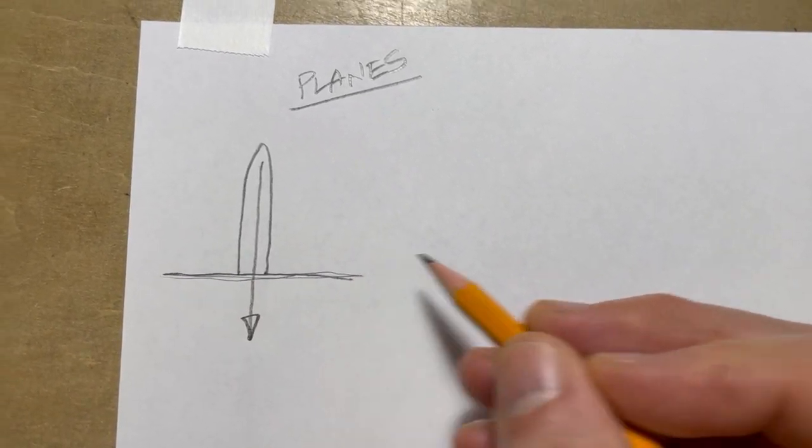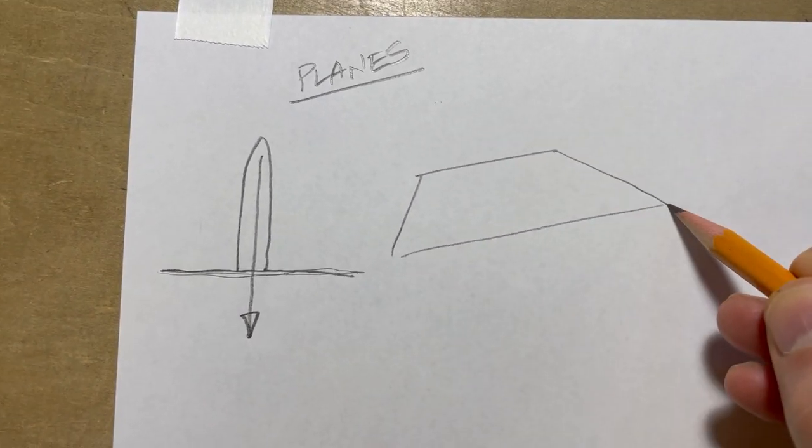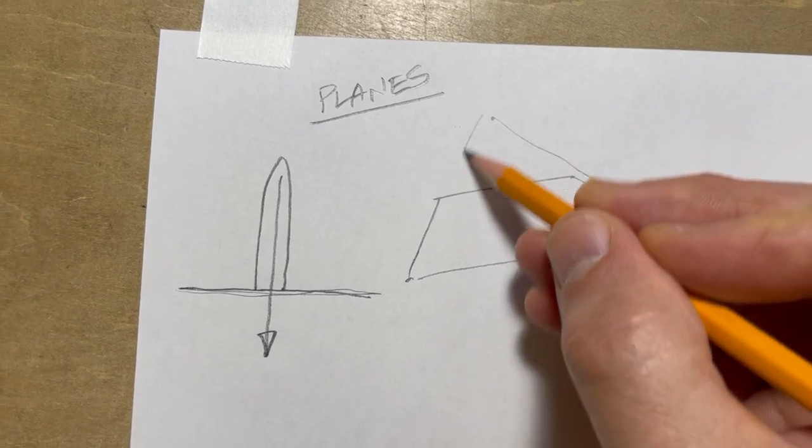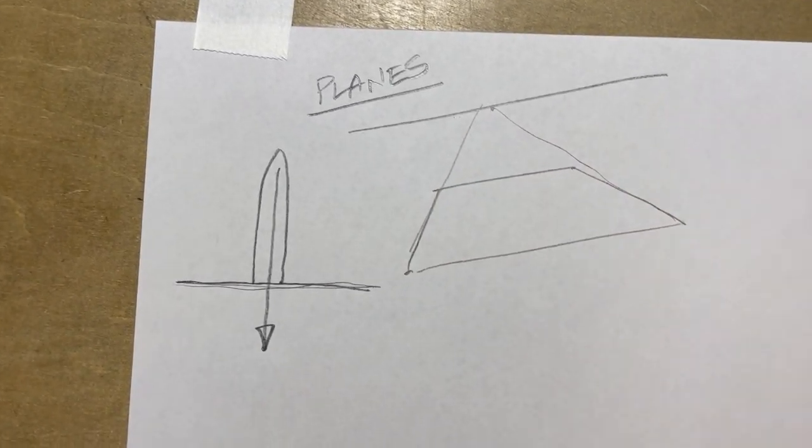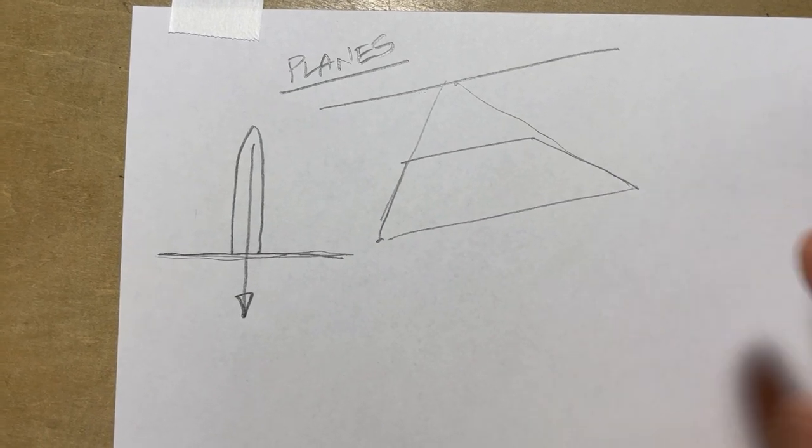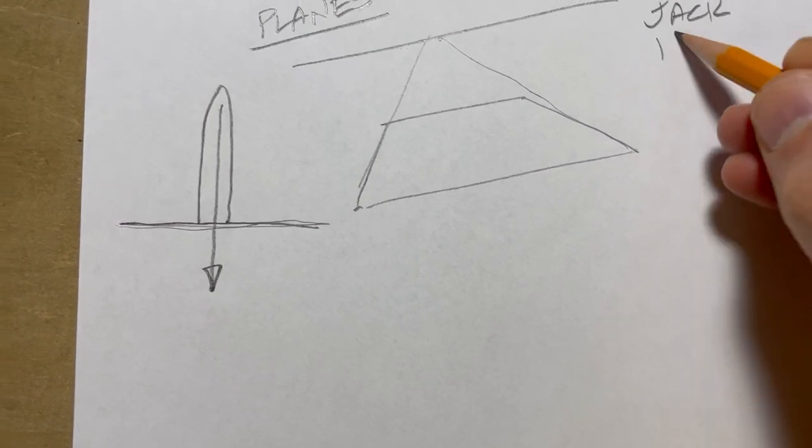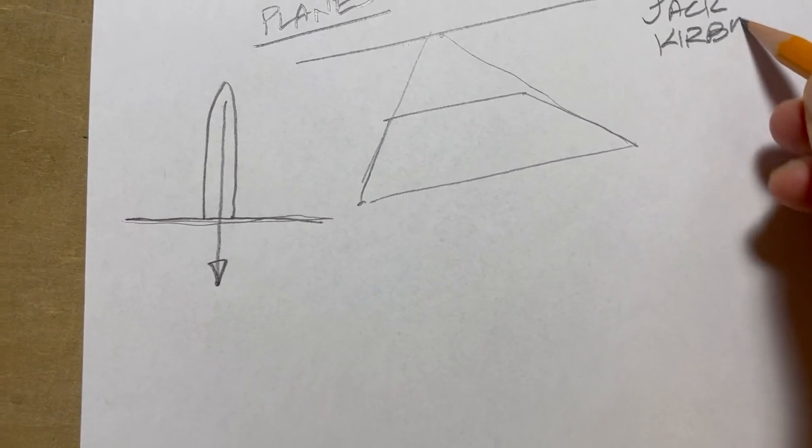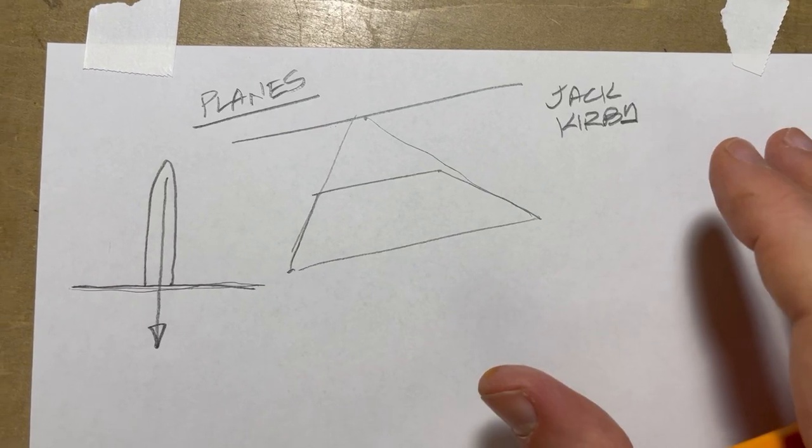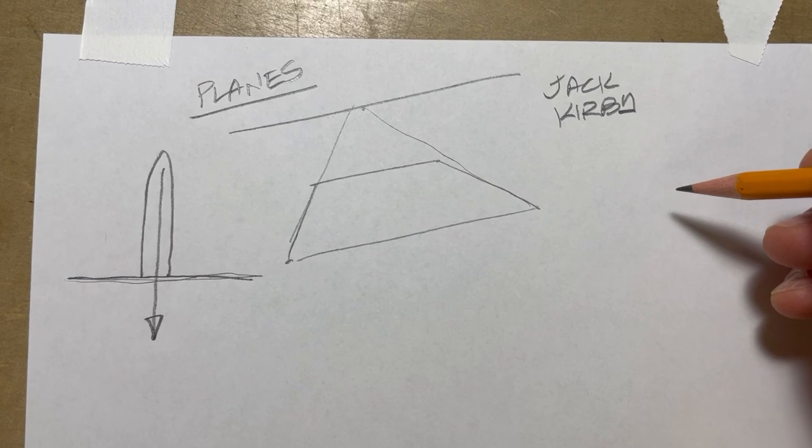Planes can be drawn in perspective like so. As soon as you do, you establish a horizon line which gives an added feeling of perspective. Now Jack Kirby, for example, used planes all the time and it's not necessarily much noticed in his work.